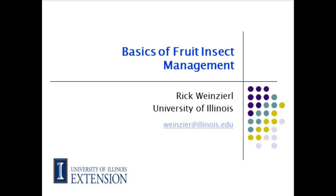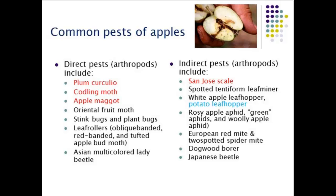Here's a sort of overview of how I'm going to approach this. I'm going to talk about pests of apples, peaches, and small fruits. In each case I'll list the direct pests — the ones that feed in or on the fruit itself — and the indirect ones that feed on other parts of the plant. The ones highlighted in red are the ones we'll actually spend some time on because they're either the most important or they provide good examples.